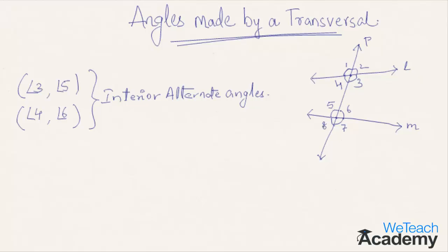Similarly, considering exterior angles 1, 2, 7, and 8: angle 2 and angle 8 are on different vertices and lie on either side of the transversal. Similarly, angle 1 and angle 7. Hence, angle 1 and angle 7, and angle 2 and angle 8, are called exterior alternate angles.